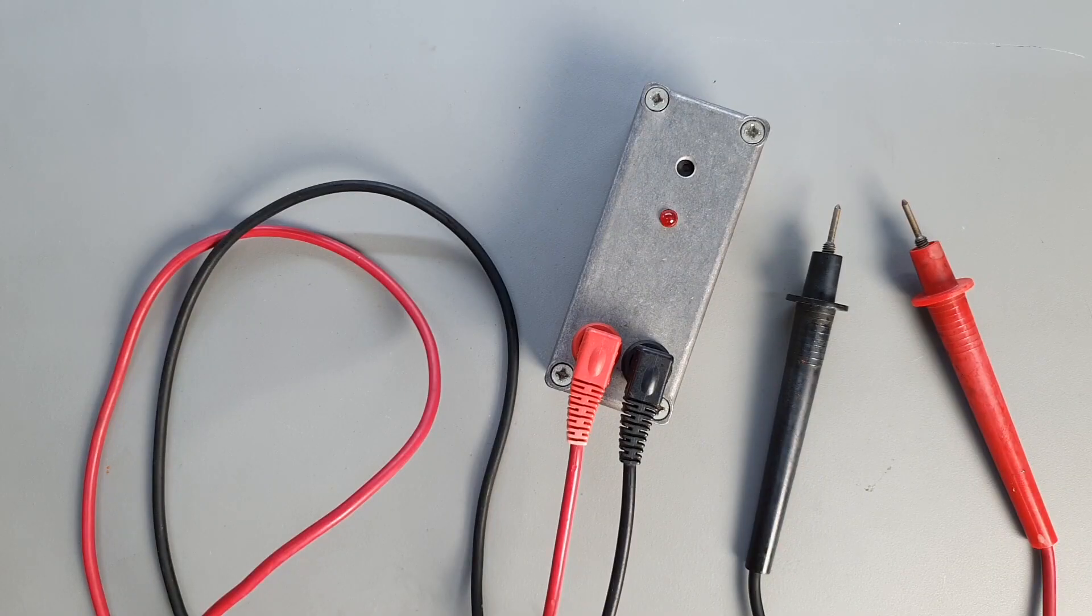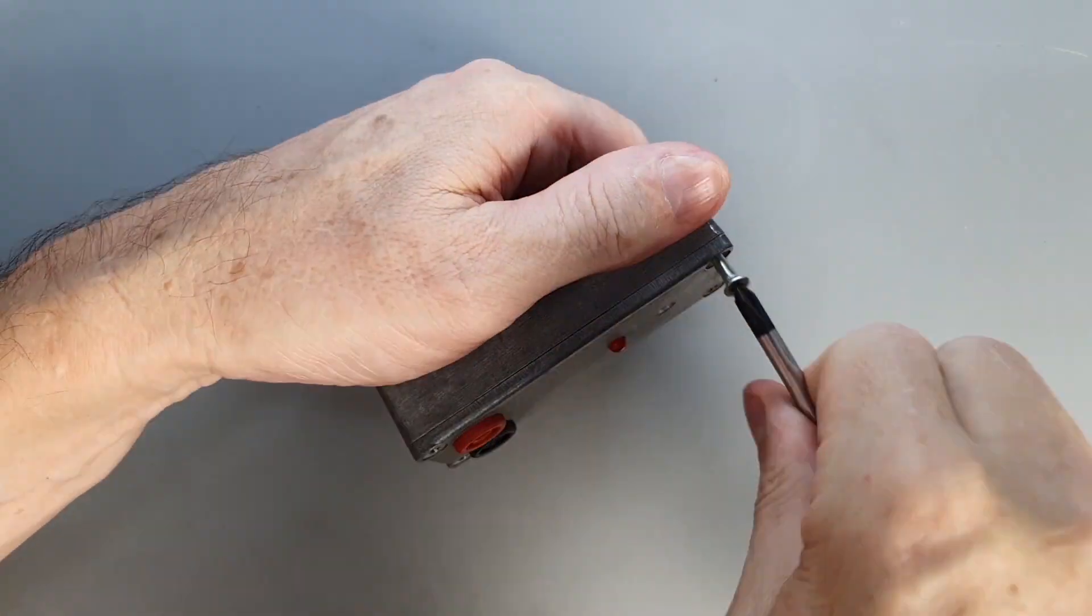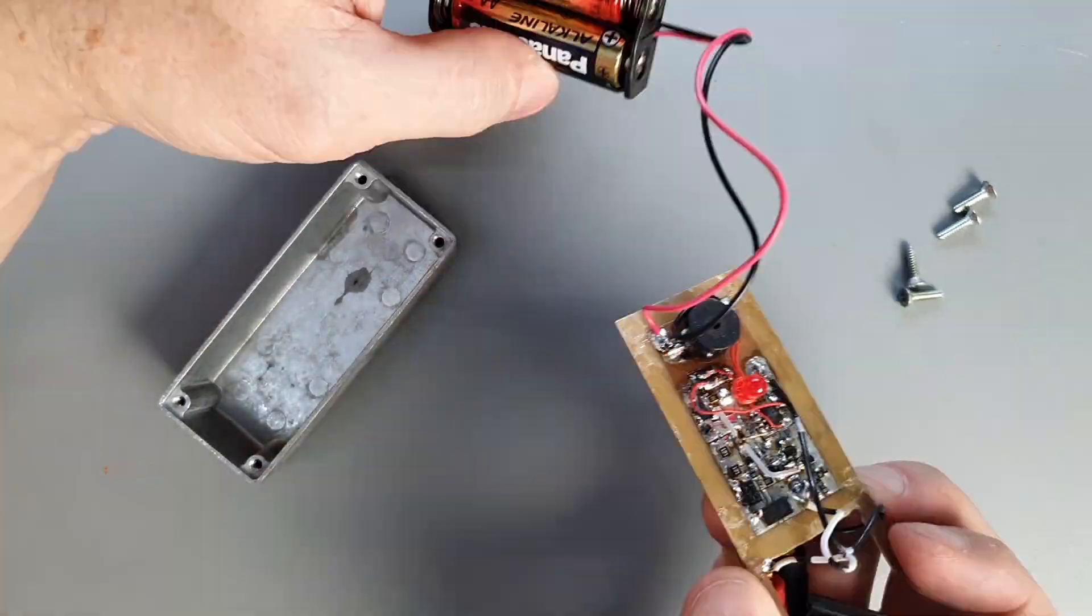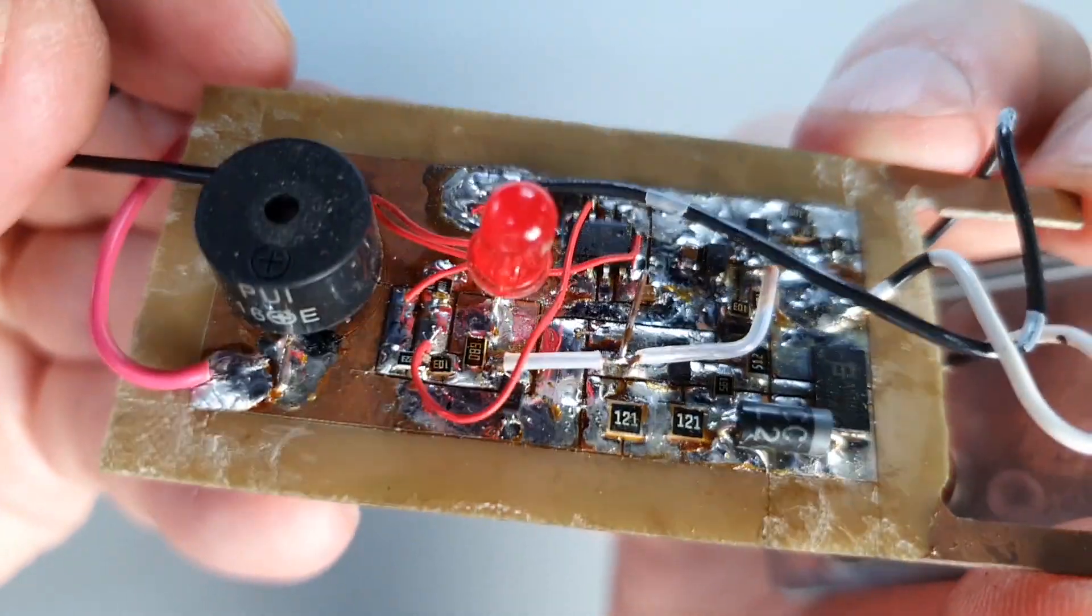Now it's time for a quick tear down to have a look at what's inside this thing. As usual it's a crazy mishmash of through hole and surface mount parts because that's basically what I got so I use what I got.